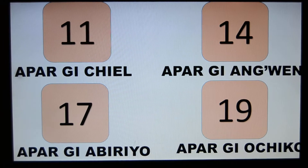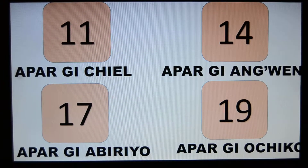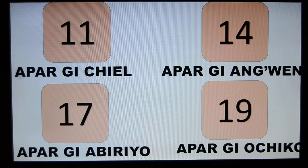APAR GI OCHIKO. Now in the Lua dialect you might not hear the GI part, so someone would just say APAR CHIEL, APAR ANGWEN, APAR ABIRYO, APAR OCHIKO. So we just say APAR GI ACHIEL, APAR GI ANGWEN, APAR GO CHIKO. But even if you said APAR GI ACHIEL, that would be okay.